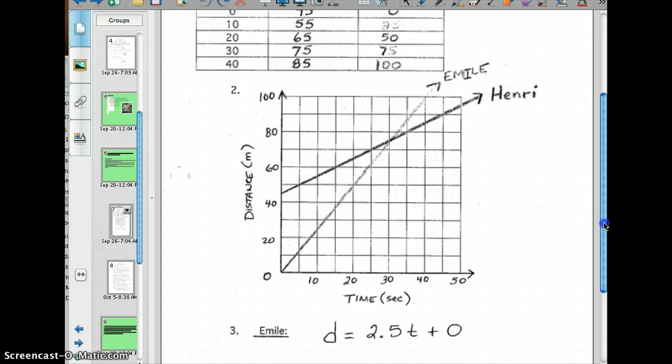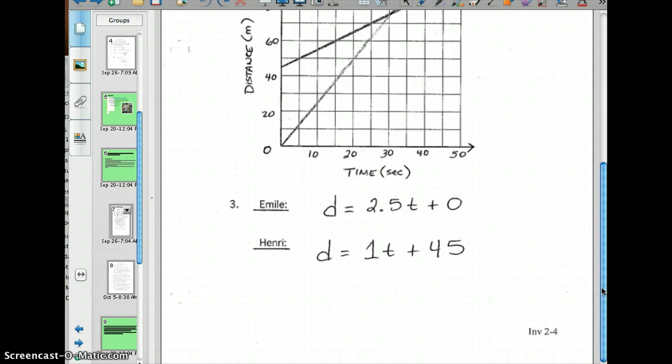Now, writing the equations. Let's go down to question three. Here's Emil, and notice how his distance is going to equal 2.5 times his time. Notice this plus 0 here, and we're just putting that in there to remember he didn't get a head start. However, his brother Henry did get a head start. If you look at Henry's equation, notice this plus 45. Now, Henry was walking 1 meter per every second. Notice the time there. You don't necessarily have to write this 1 in here. However, I like to write it in to remind me of his rate, because his rate isn't 0. It's 1. Remember that.